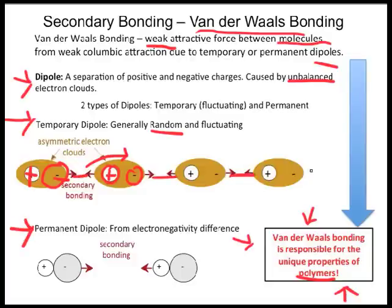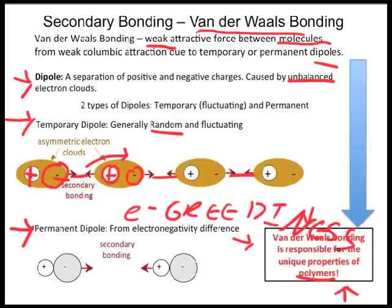Permanent dipoles occur for a number of reasons, the most common being a difference in electronegativity — a measure of how much an element attracts electrons to itself. A large electronegativity difference leads to ionic bonding, but sometimes atoms in covalent bonds also have an electronegativity difference, just not enough to be considered an ionic bond. An example is hydrochloric acid, or HCl: the chlorine is more electronegative than the hydrogen, so electrons spend more time with the chlorine, creating a partial negative charge on the chlorine and a partial positive charge on the hydrogen.